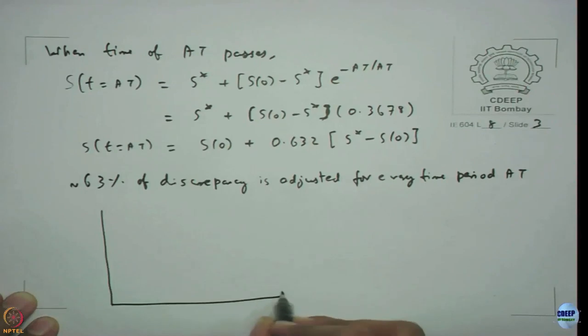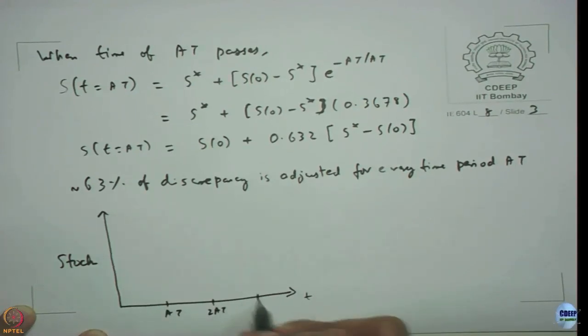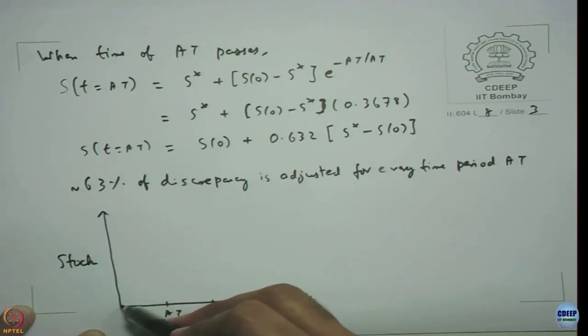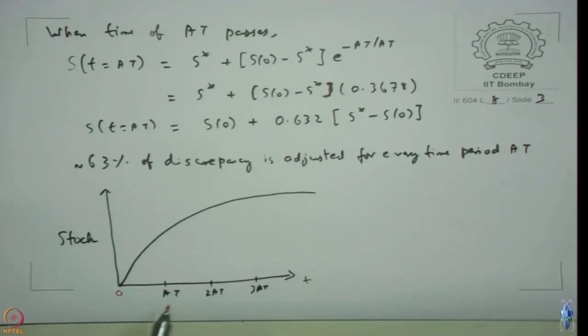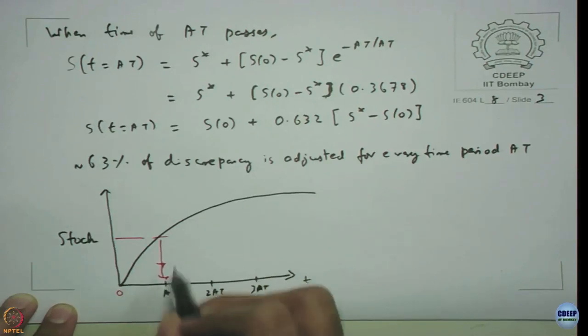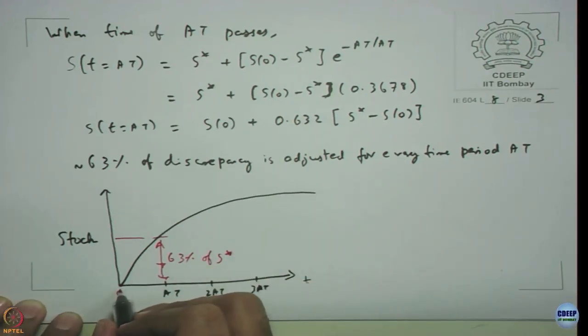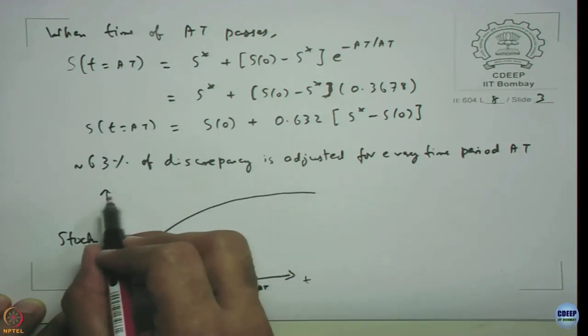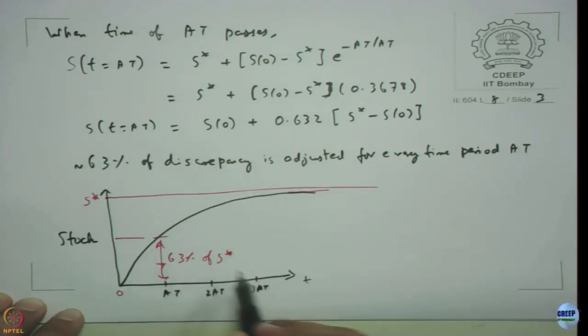We have a graph like this: stock versus time at AT, 2AT, 3AT and so on. Up to this point will be 63 percent of s*. Here initial value of stock is 0, so wherever it is reaching that is your s* at infinite time. 63 percent discrepancy is fulfilled when AT time period passes.